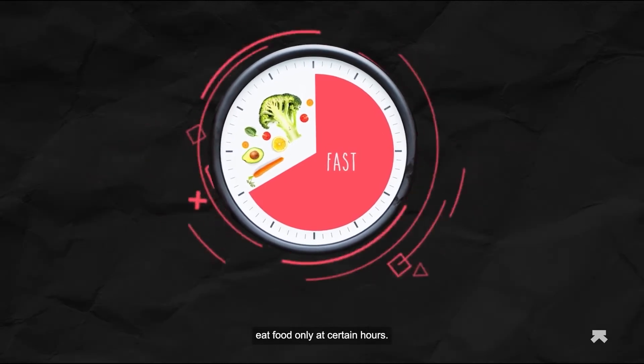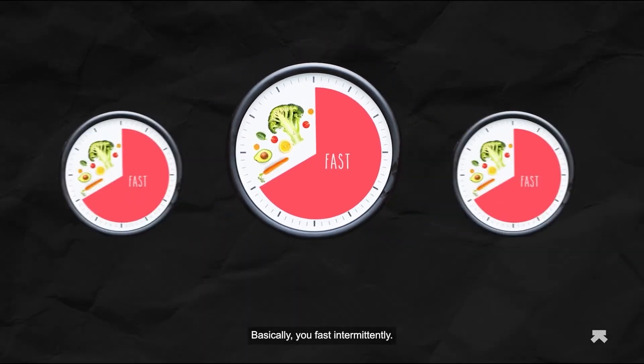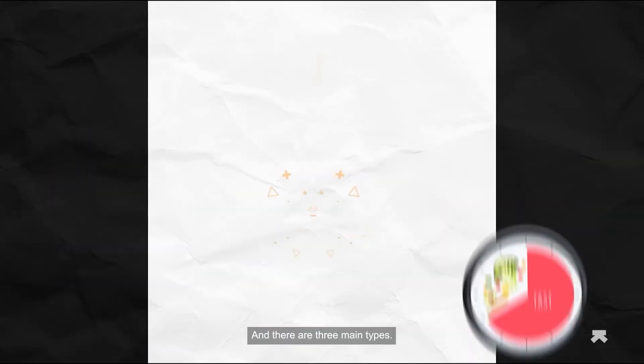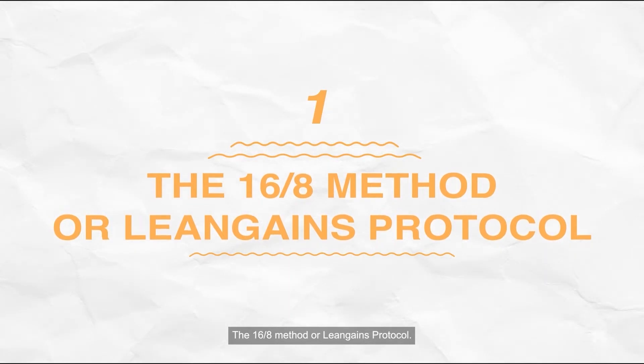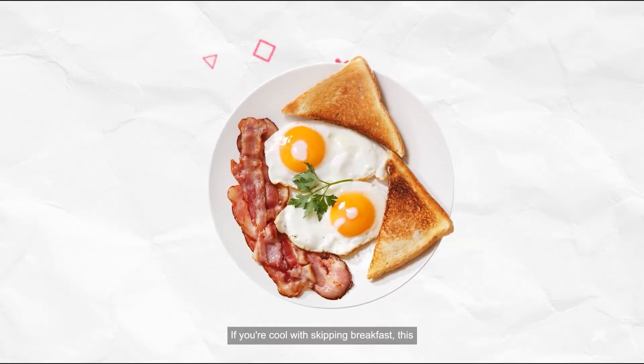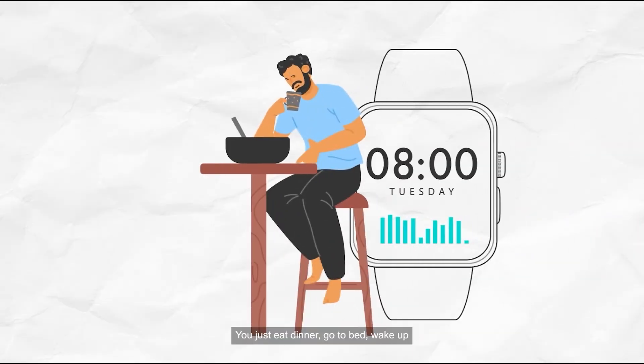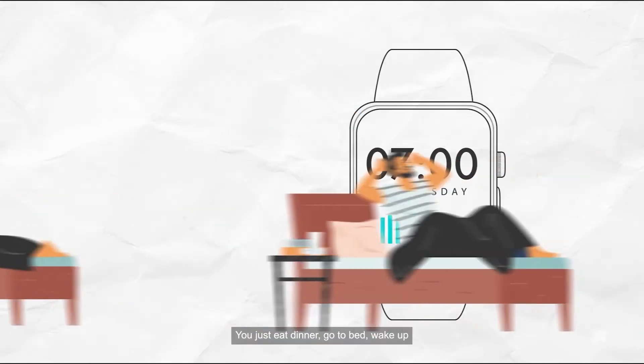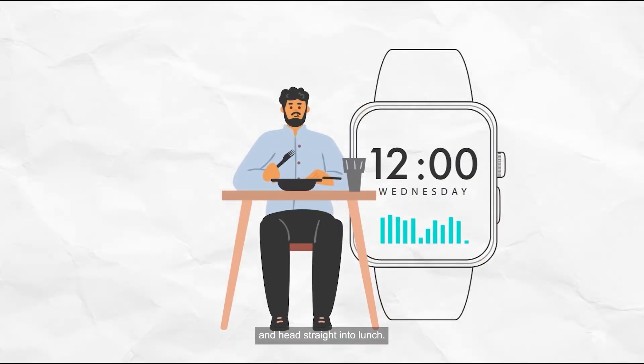eat food only at certain hours - basically, you fast intermittently. There are three main types. Number one: the 16-8 method, or Leangains Protocol. If you're cool with skipping breakfast, this may be the method for you. It's super easy - you just eat dinner, go to bed, wake up, and fast forward through your daily eggs or cornflakes and head straight into lunch. The point is to fast for 16 hours and eat within an 8-hour window.